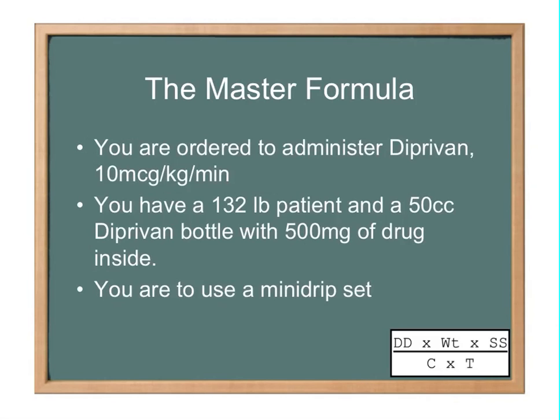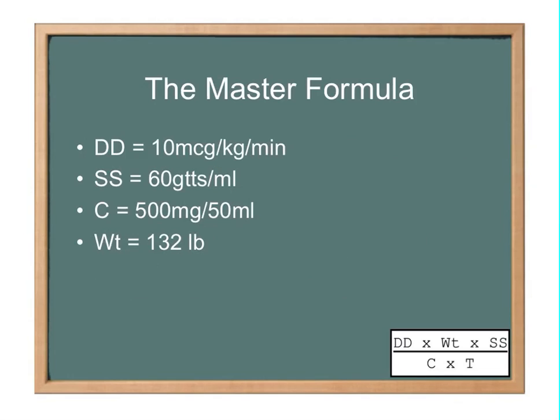Alright, let's do another one. This one's a little bit more difficult. You're now ordered to administer Diprivan, and that's going to be your post rapid sequence induction medication to keep a patient sedated. 10 micrograms per kilogram per minute. That's our desired dose right there. You have a 132 pound patient and a 50 cc bottle of Diprivan with 500 milligrams of Diprivan inside of it. And you're going to use a mini drip set. That's a 60 drop set. So we've got a whole lot of information there.